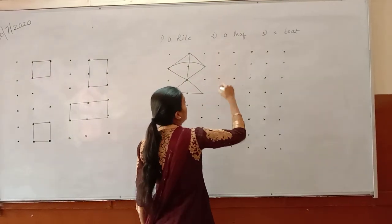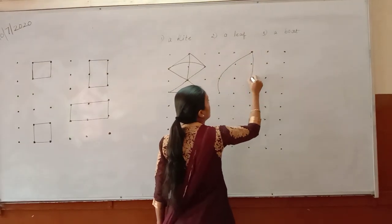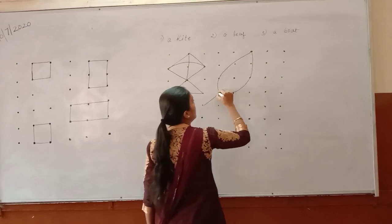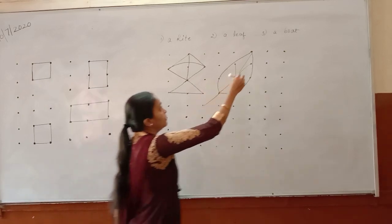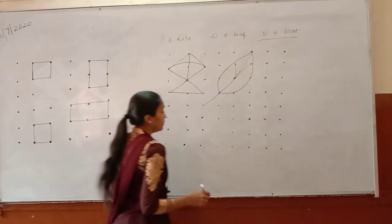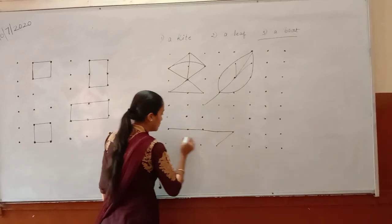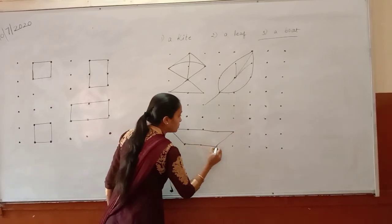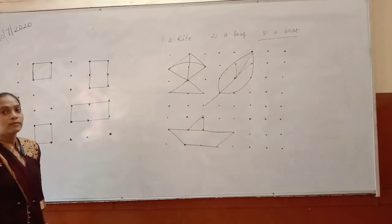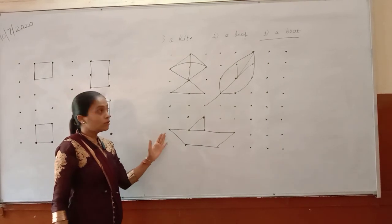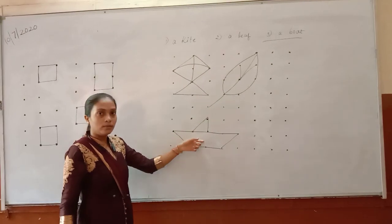Next is a leaf — you will make a count line and you can make a leaf like this way. Next is a boat — we will make a boat. It can be a boat like this. This place is given in your textbook — this way you have to draw the kite, leaf, and a boat.